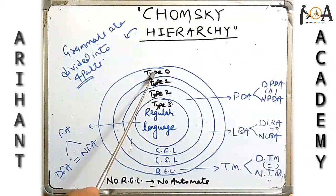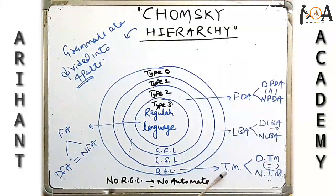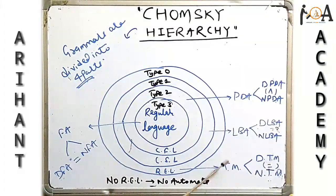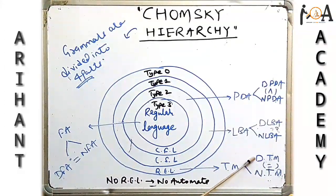Type 0 is also called a recursively enumerable language. It is recognized by Turing machine, which is of two types: deterministic Turing machine and non-deterministic Turing machine. The power of both DTM and non-deterministic Turing machine is equal.